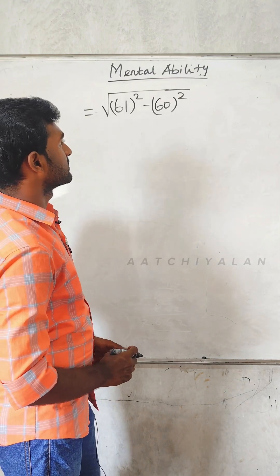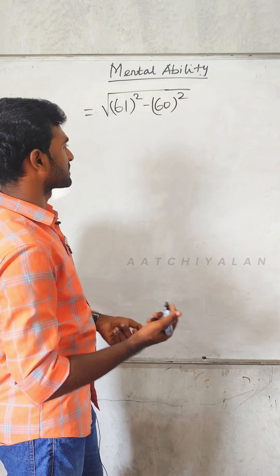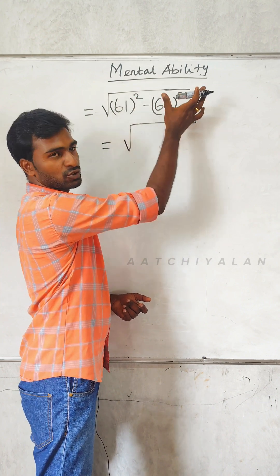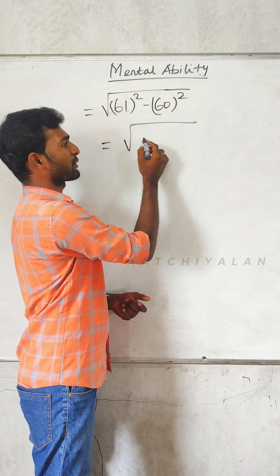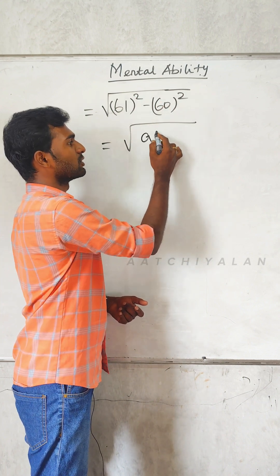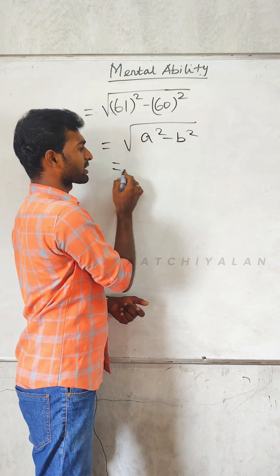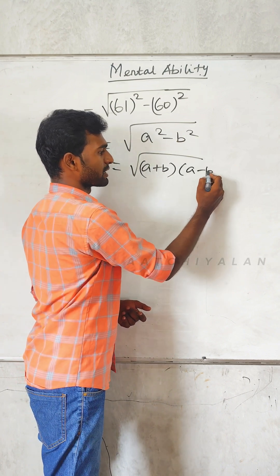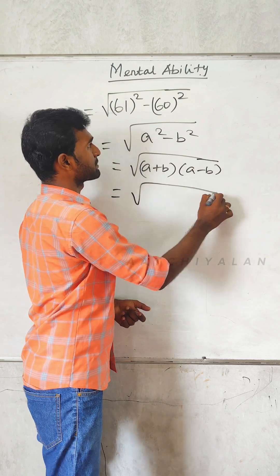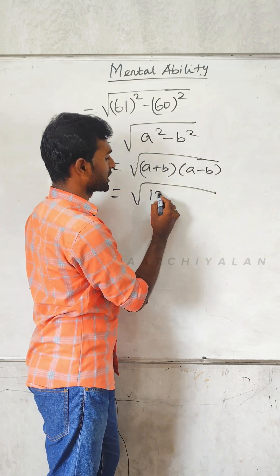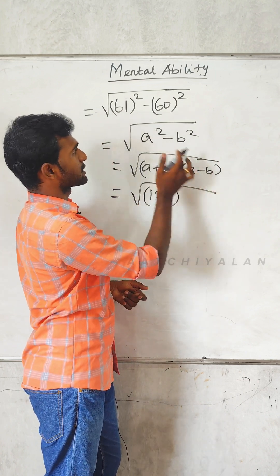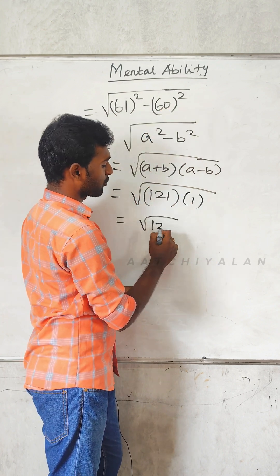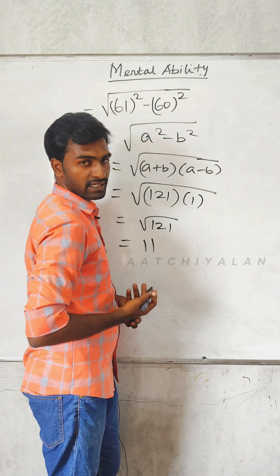Square root of 61 square minus 60 square. One simple sum using a² minus b² formula. A plus b is 61 plus 60 equals 121, and a minus b is 61 minus 60 equals 1. So the answer is the root of 121. Answer is 11.